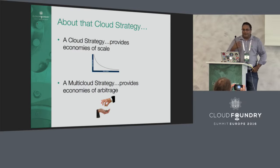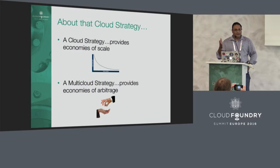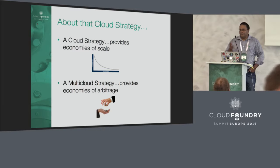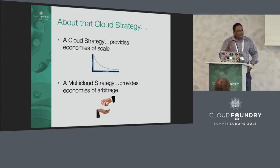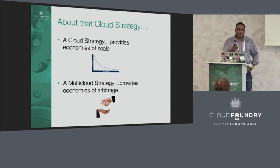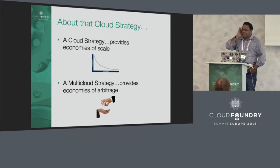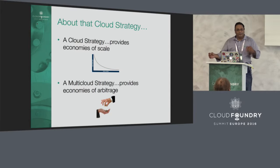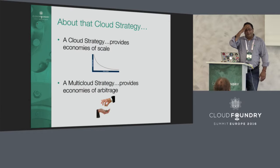This is probably the most important point I want to make today: a cloud strategy provides economies of scale, but a multi-cloud strategy enables economies of arbitrage. Part of the reason for that is that today the spread of cost for a set of compute instances varies by as much as 80% across cloud vendors. So instead of paying a dollar, you might pay 20 cents — you have to be ready to move for the right application.